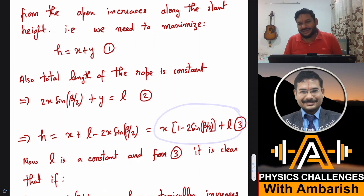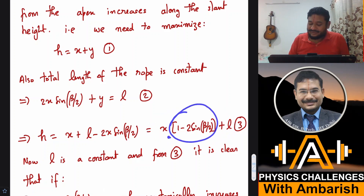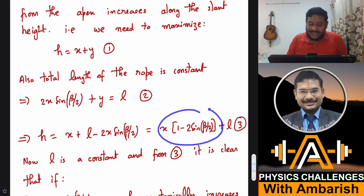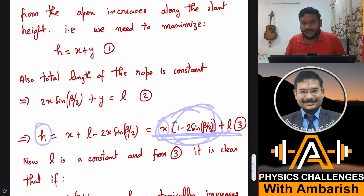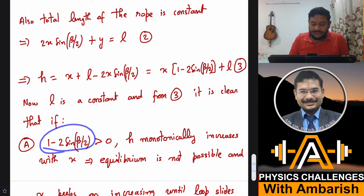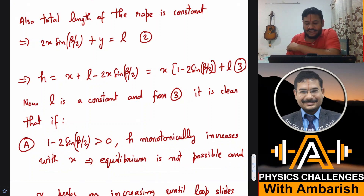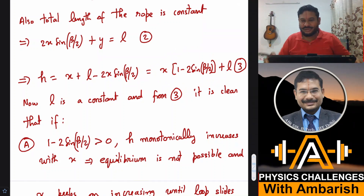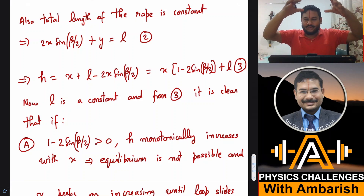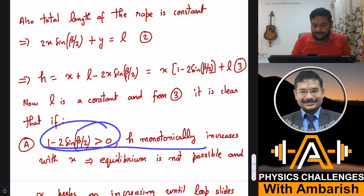Please pay careful attention — consider the coefficient of X. If the coefficient of X is positive, then as X keeps increasing, H keeps increasing. H becomes a monotonically increasing function of X. So if one minus two sine(beta/2) is greater than zero, H monotonically increases with X and equilibrium is not possible. The person keeps coming down until the entire loop settles to the bottom of the hill.